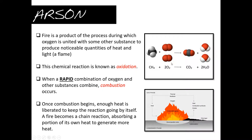Fire is actually a chemical process — a chemical reaction. It is the product of oxygen combined with another substance, such as an accelerant, and it produces light and heat. This process is known as oxidation. When you have a rapid combination of oxygen and other substances, you have combustion. Once combustion begins, enough heat is liberated to keep the chemical reaction going by itself, creating a self-sustaining chain reaction.